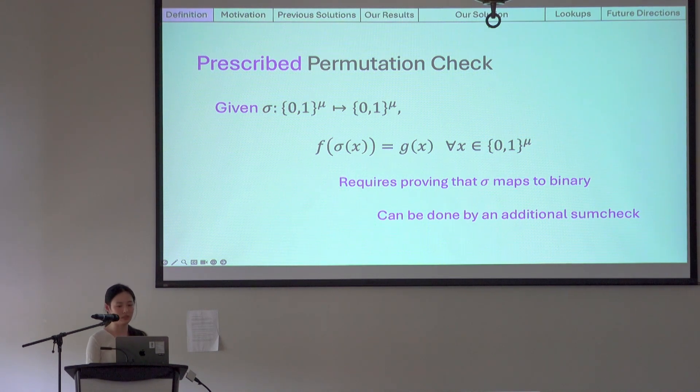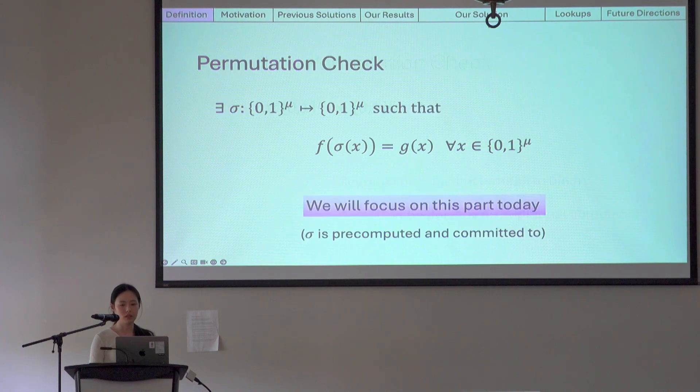We will not have time to go into the details of this today. So for today, we will only focus on the basic permutation check, assuming the permutation polynomial sigma is pre-computed and committed to.